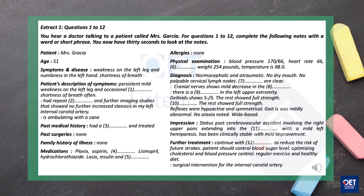Your blood pressure is 170 over 66, heart rate 66, respiratory rate 16, your weight is 254 pounds, and your temperature is 98. Normal cephalic and atraumatic. No dry mouth. No palpable cervical lymph nodes. Your conjunctiva and sclera were clear. Your cranial nerves show mild decrease in the left nasolabial fold.